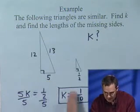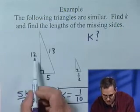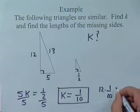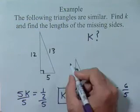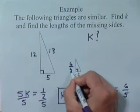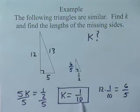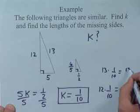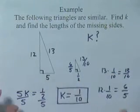If I multiply 5 times 1/10, I'm going to get 1/2. If I want this side, all I have to do is take 12 times 1/10. We'll simplify—let's see, 2 can go into each. If I want the hypotenuse over here, I know my K, so 13 times our K equals 13/10, and I now have my missing sides.